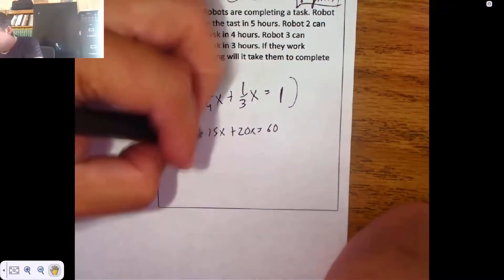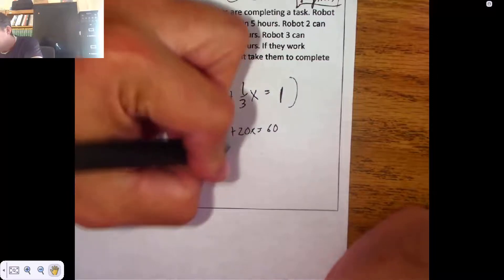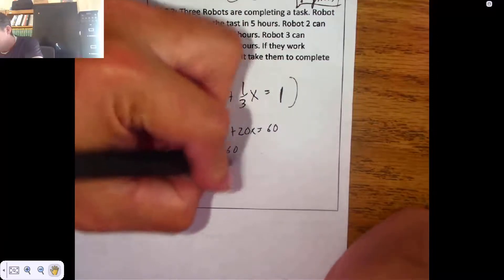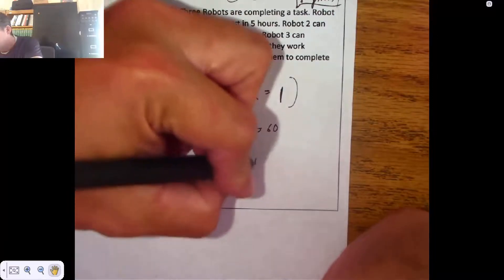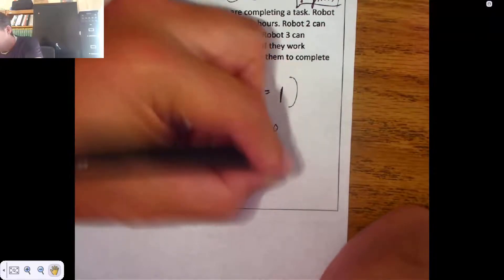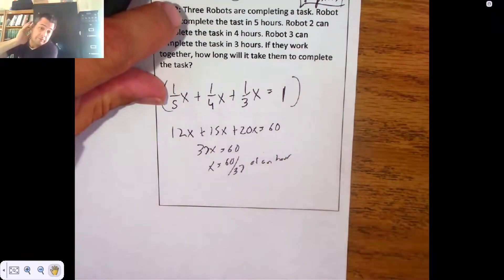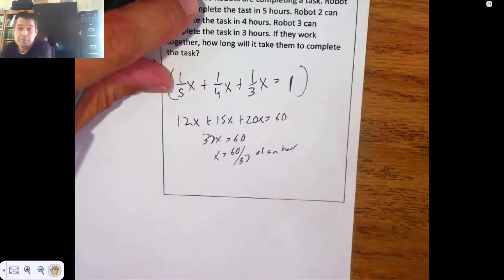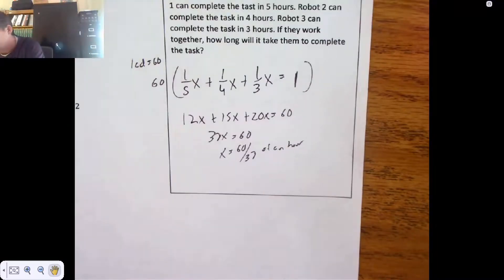Adding these together, there's 37 X's. So X is 60 37ths of an hour. Just a little over an hour. Quite a bit over an hour, actually. Like an hour and maybe close to 40 minutes. But 60 37ths of an hour.